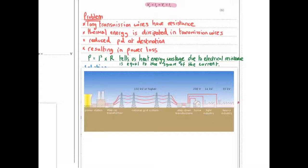Now this one's a bit tricky. This equation here tells us that heat energy wasted due to electrical resistance is equal to the square of the current. In other words, P divided by I squared equals resistance. So the greater the current you're reducing the power significantly because you square the current. So increasing current greatly increases the resistance.